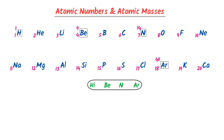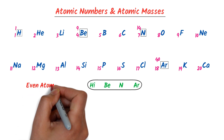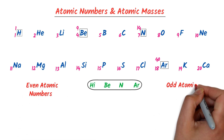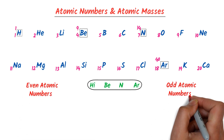Remember that we use two common tricks — one for even atomic numbers and one for odd atomic numbers. In the case of even atomic numbers, double it. In the case of odd atomic numbers, double it and add 1.